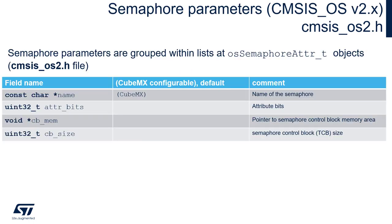Let's have a look at semaphore parameters stored within the CMSIS osSemaphoreAttr_t structure. We have to fill it partially during semaphore creation, but at that time we are specifying only the name of the semaphore. The rest of the fields are filled during the semaphore creation process, so it's quite invisible for us, but it's good to know what is stored there and where to find the main information about the semaphore.